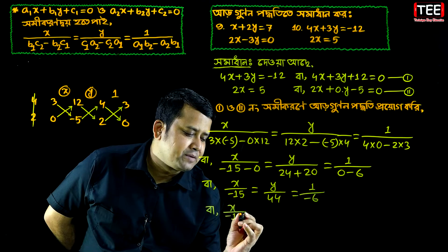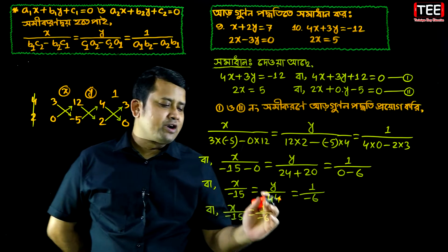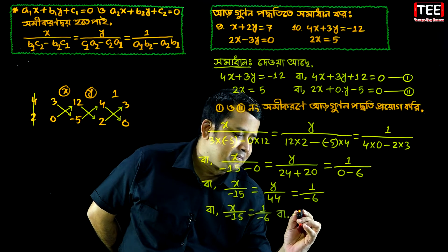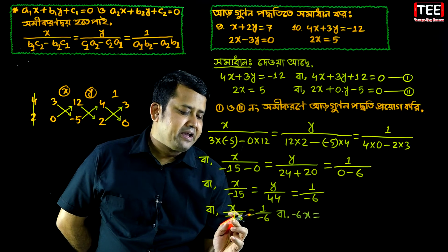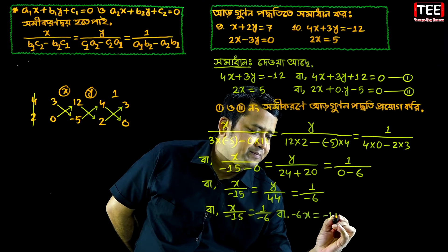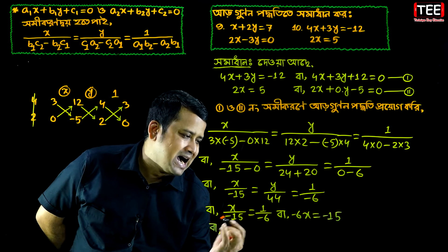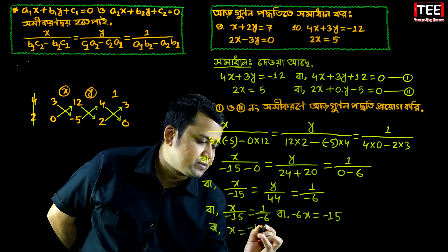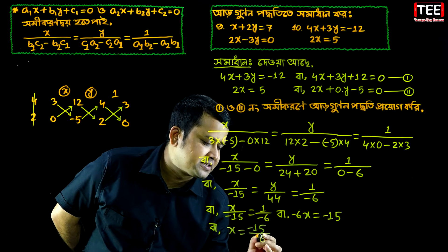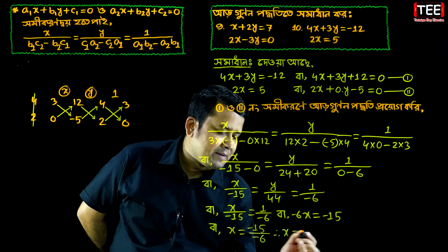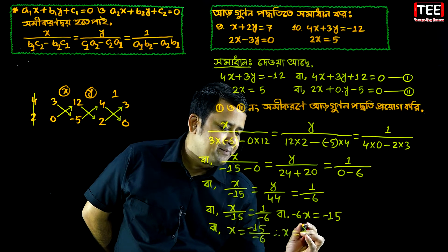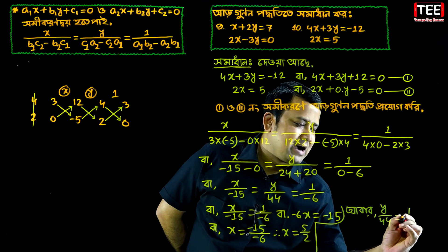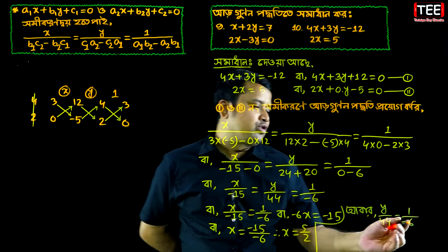2x minus 15 equal to 1 by minus 6. We will divide: x equals 15 minus 6. We will divide: x equals 5 by 2 pi. We will write eta equals 8. Y by 44 equals 1 by minus 6. We will divide r by eta equals 6.